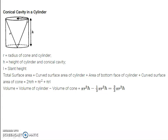The next important question is conical cavity in a cylinder — that is, inside a cylinder you are carving out a conical cavity. Total surface area is curved surface area of the cylinder plus area of the bottom face of the cylinder plus curved surface area of the cone. For volume, since the conical cavity is inside the cylinder, you have subtraction here. If the cone is on the cylinder, you will have addition.